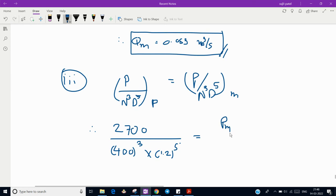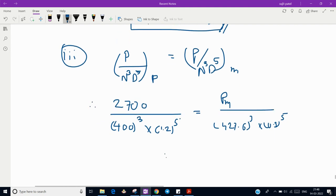And here, power for model we have to find out, 427.6 cubed into 0.3 to the power 5. Just solve this, you will get 3.22 kilowatt. So this is answer of the last question that we have to find out.